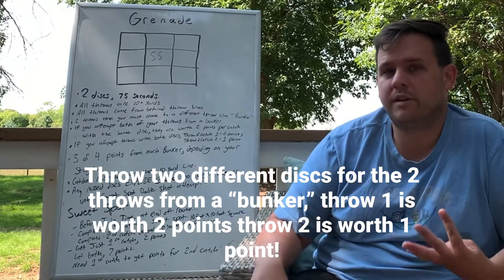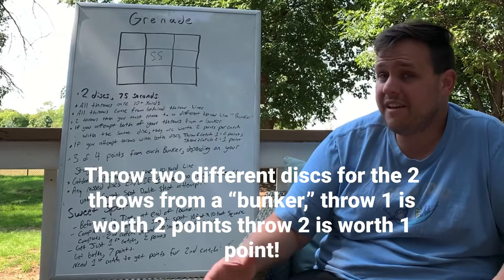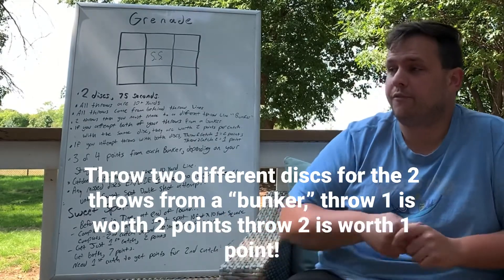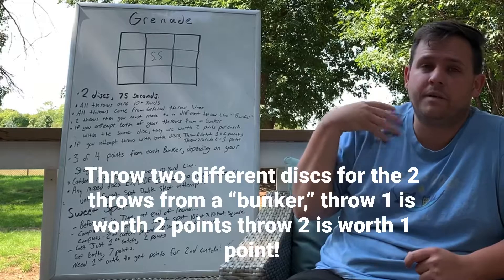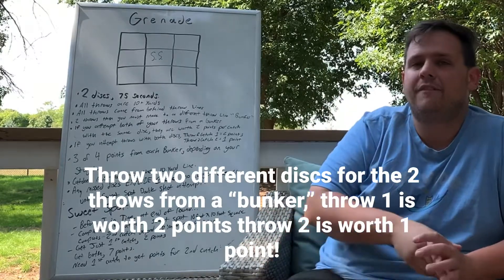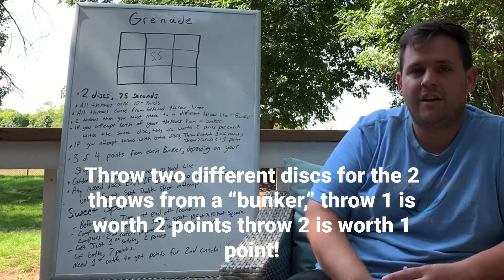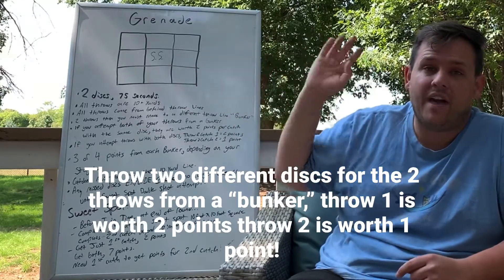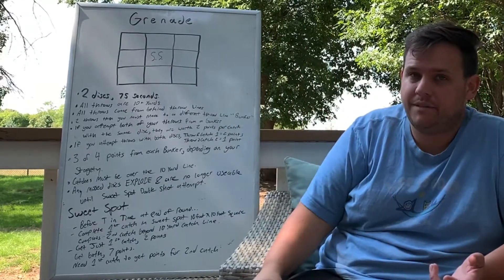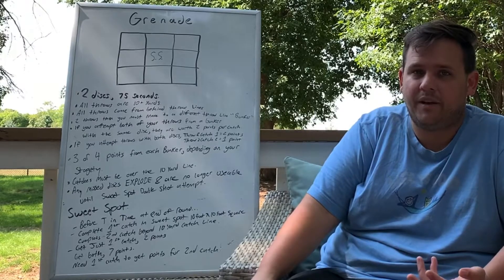If you use both discs, your first throw attempt would be a two-point catch, and then if you use the second disc and threw it again, that would be a one-point attempt. So it'd be three points total at that throwing line.